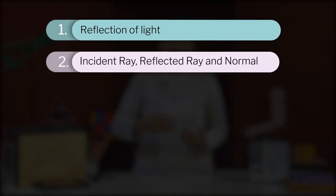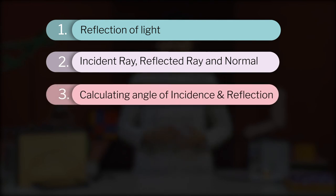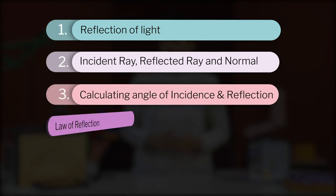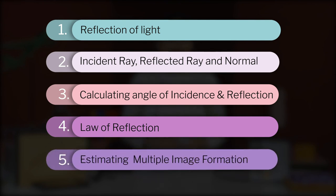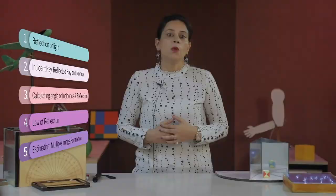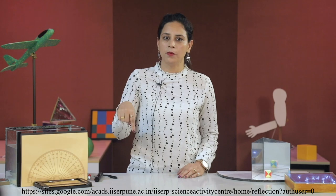To summarize, in this series of videos on reflection of light we learned about reflection of light, incident ray, reflected ray, and normal; calculating angle of incidence and angle of reflection; the law of reflection; and estimating and calculating multiple image formation. We'll end with an interesting application: the word 'ambulance' is written laterally inverted on the vehicle's front, but when seen in a rear-view mirror it appears correct. By now you should know how those inverted letters appear precise in the mirror.